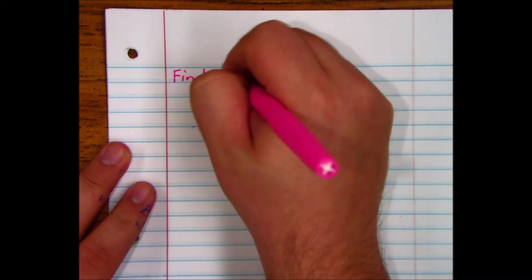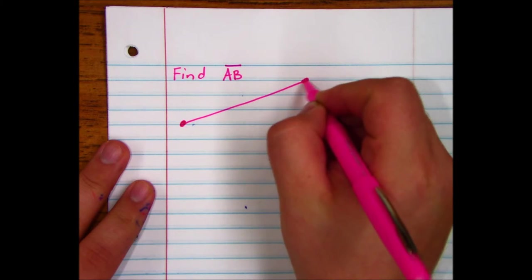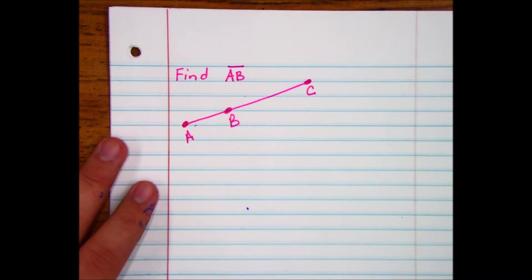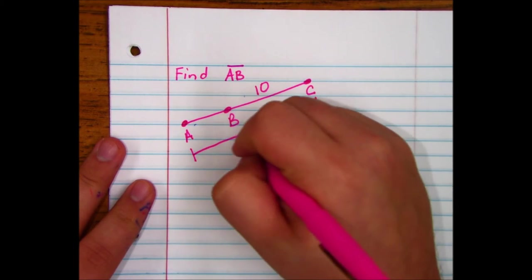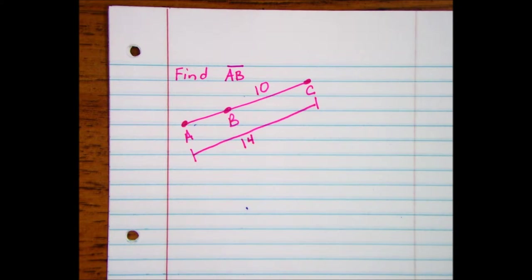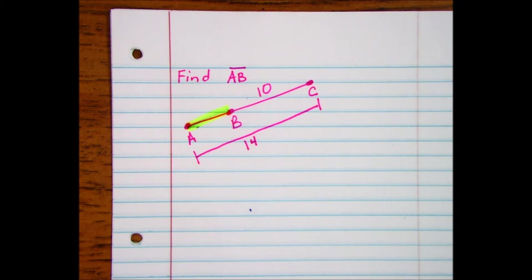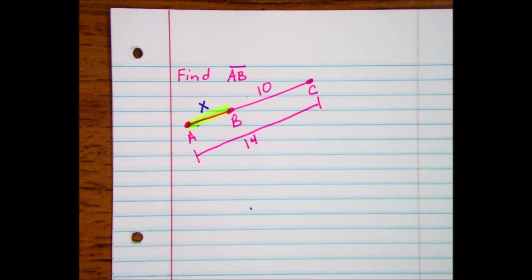Now, this time I want to find AB. And I first want you to see where AB is. This time, AB is one of the smaller sections of the line segment. It's not the entire line segment this go-around. So we're finding AB. So let's just denote AB as some variable. I'm going to call it x.